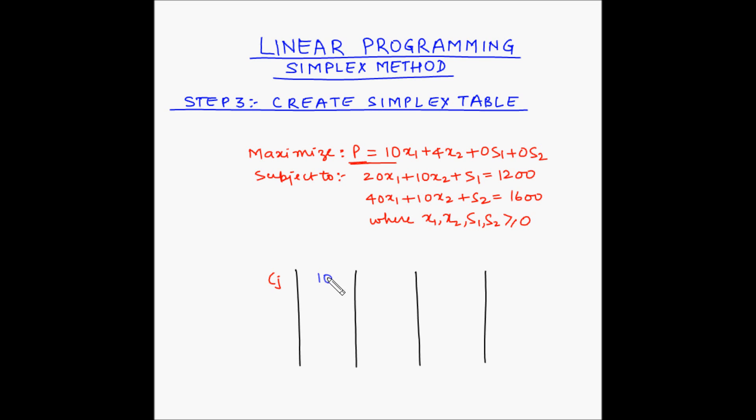So we have 10, 4, 0, 0. Now this row is also known as contribution per unit, and is represented by cj. Contribution because these coefficients represent the profit or the cost per unit of the variables.